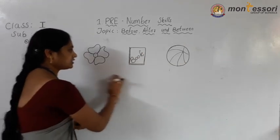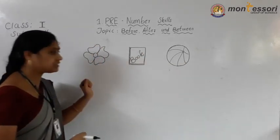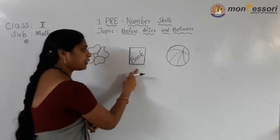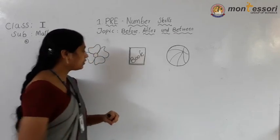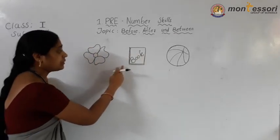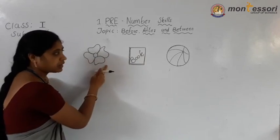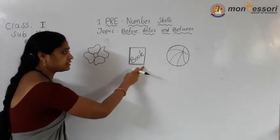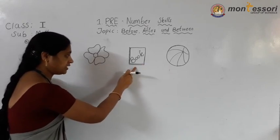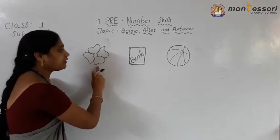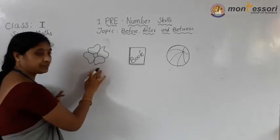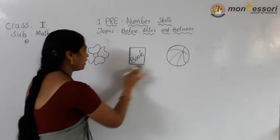Now here these are pictures. In the pictures I have places. This one is the flower, here book, and here ball. The flower's place is before the book. The ball's place is after the book. The book is between the flower and ball.